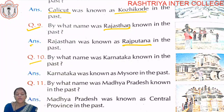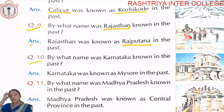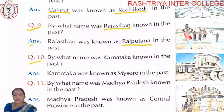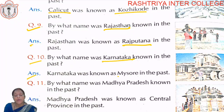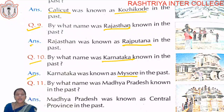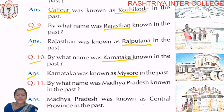Question number ten: By what name was Karnataka known in the past? Karnataka ko puraane samay mein kis naam se jaana jaata hai? Karnataka was known as Mysore in the past. Karnataka ko Mysore ki naam se jaana jaata hai.